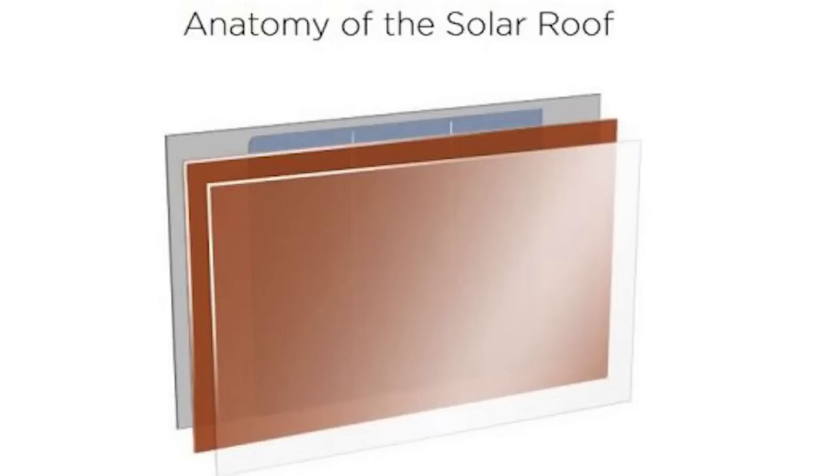Now, from what we know, the Tesla solar roofs consist of three layers: the solar cell, the glass cover, and the Louvre coat. Now let's start with the solar cells.